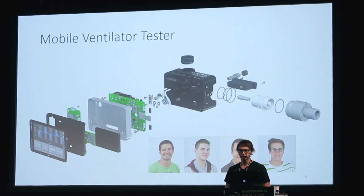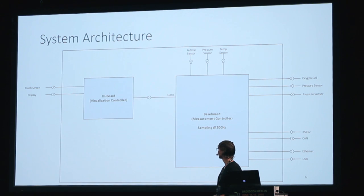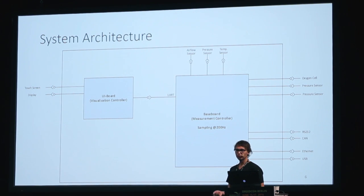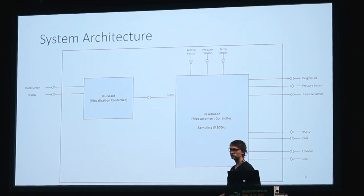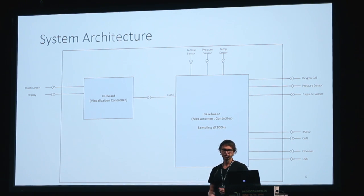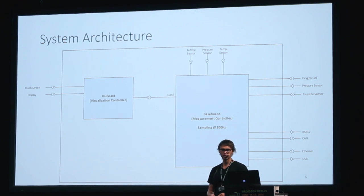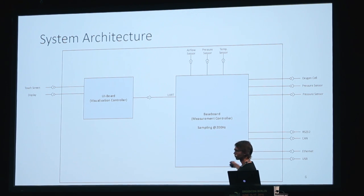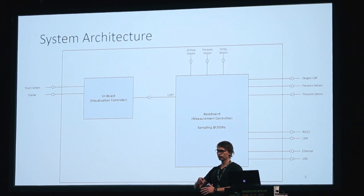Let us go through the challenges we faced while creating this beautiful piece of engineering. The simplified system architecture has a bare metal controller on the right, which does all the signal processing and sampling in real time — meaning we have exactly 5 milliseconds, 5.0001. So it's real, real time. It collects all the sensors, and when it has a batch of all those sensors, it transfers it to the UI board.